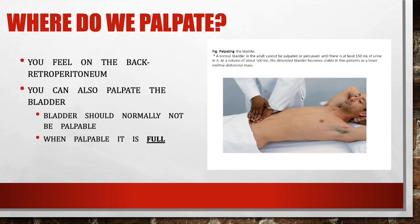When we palpate, we need to know that the kidneys are located in the back of the abdomen — we can't palpate them from the front because the rib cage covers them, so we feel on the retroperitoneum. The bladder is normally not palpable — it's only palpable when full. If you can feel the bladder over the pubic bone, that is an abnormal finding, because by the time it's palpable, the patient should already be urinating.